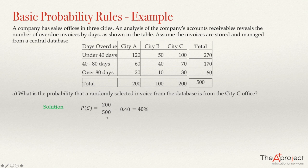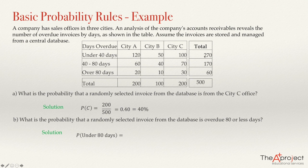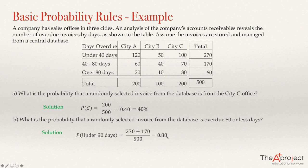Question B: what is the probability that a randomly selected invoice from the database is overdue 80 or less days? We count how many invoices are overdue 80 or less days: there are 270 overdue under 40 days and 170 between 40 and 80 days. So the answer is 270 plus 170 divided by 500, which gives 0.88.